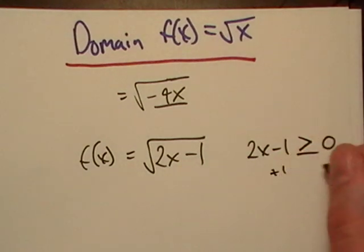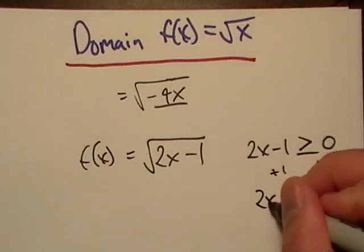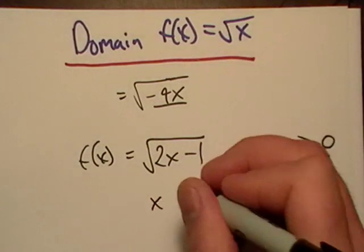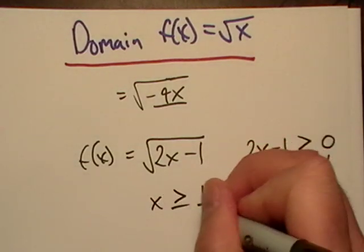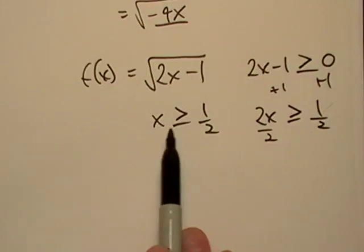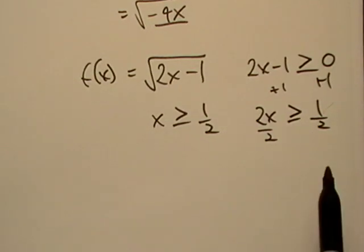We're just going to add one to both sides. Then it looks like I'm going to have to divide by 2 on both sides. So then I get x being greater than or equal to 1/2, right? So x has to be greater than or equal to 1/2.